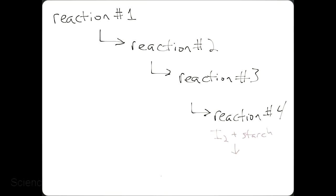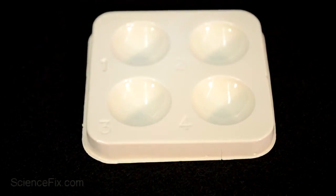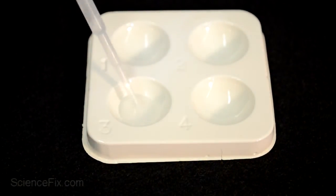In the last reaction, iodine is going to react with starch to form an iodine-starch complex. Here's where the reactions are going to take place. The first three reactants are going to go in first, then followed by the starch solution.